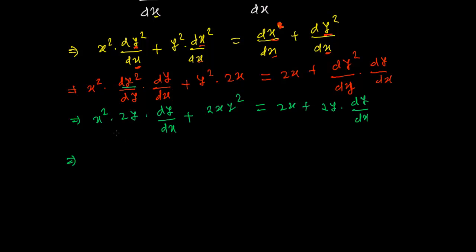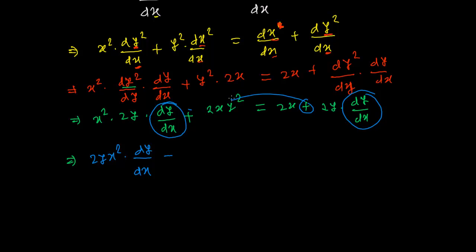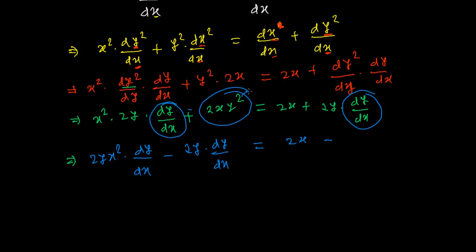Now, after differentiating both sides, we collect all dy/dx terms on one side. Bringing the dy/dx term from the right-hand side to the left: 2x²y·dy/dx − 2y·dy/dx = 2x − 2xy². The positive term moves to the other side as a negative.